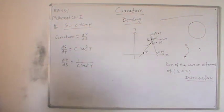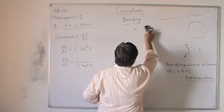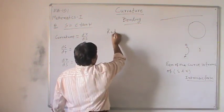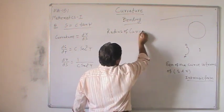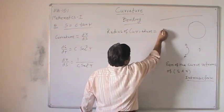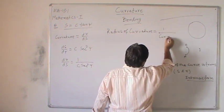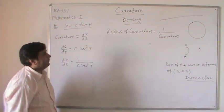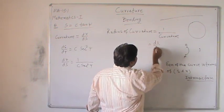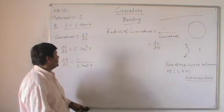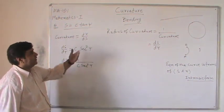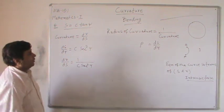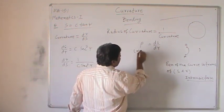We will frequently refer to bending in the form of radius of curvature. The radius of curvature is defined as the reciprocal of the curvature. So in terms of intrinsic form, the radius of curvature is given by dS/d psi, since curvature equals d psi/dS. We usually denote radius of curvature by the Greek symbol rho.